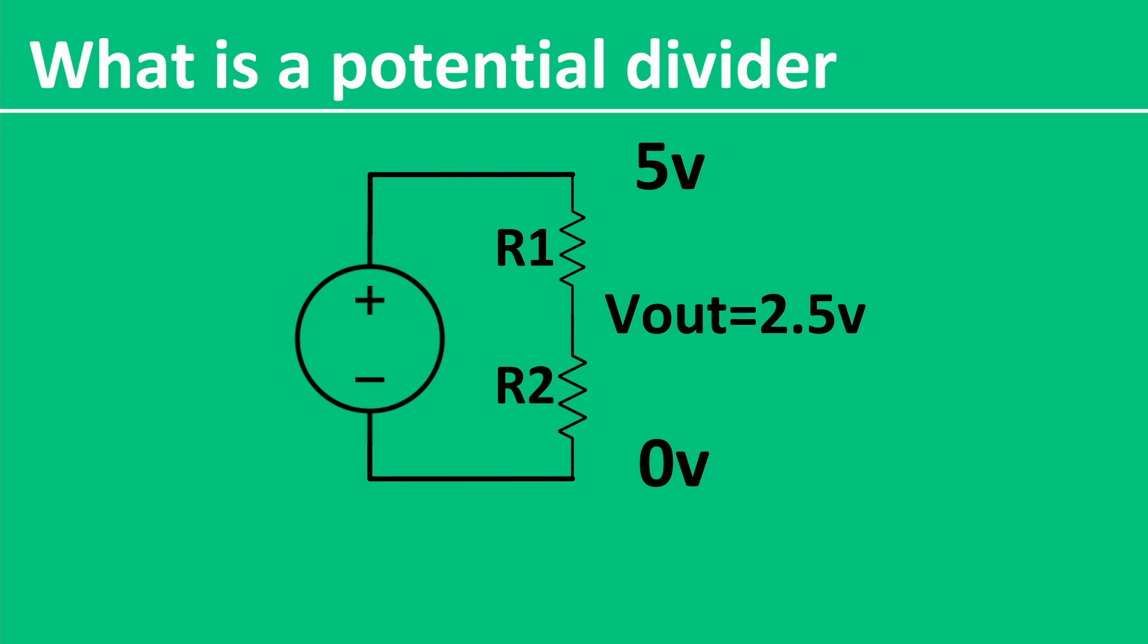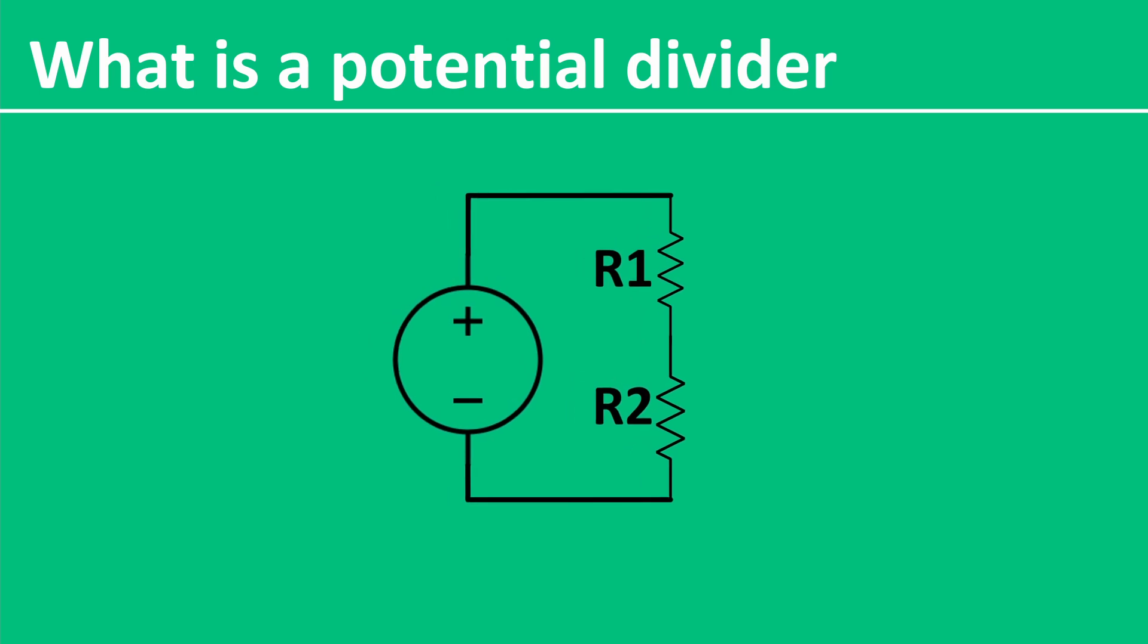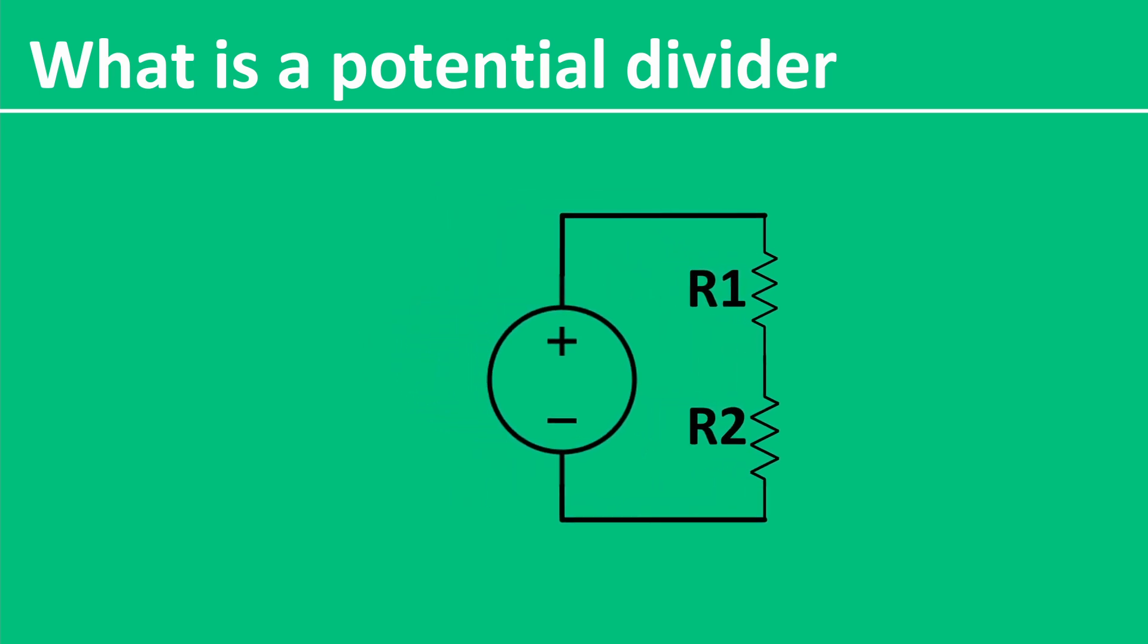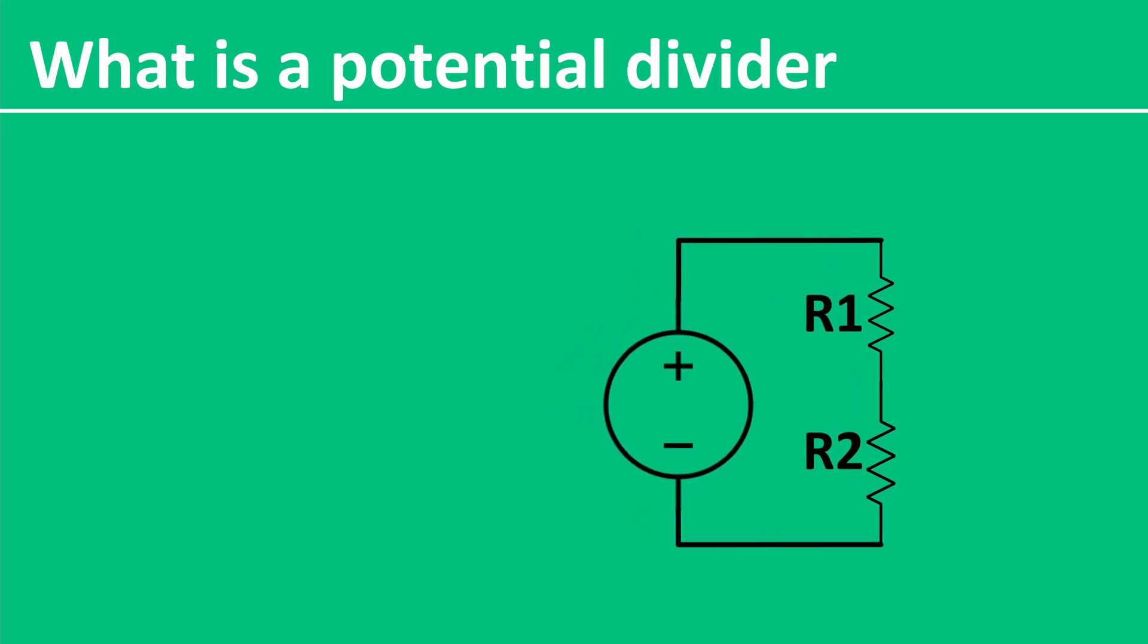This means each resistor has a voltage drop of 2.5 volts, meaning the voltage has been divided by 2. We can alter the relative resistances of these two resistors, and generate any output voltage we want, as long as it's less than the input. The voltage at the middle is given by the formula V out equals V in times R2 divided by R1 plus R2, which basically says that the voltage out is equivalent to the voltage in times the ratio of R2 to the total resistance.